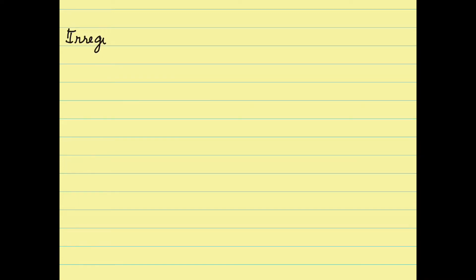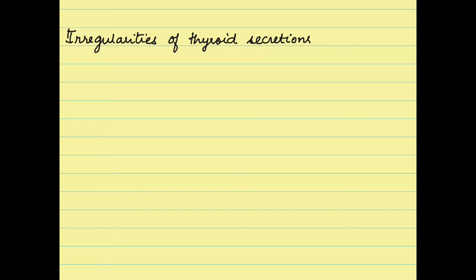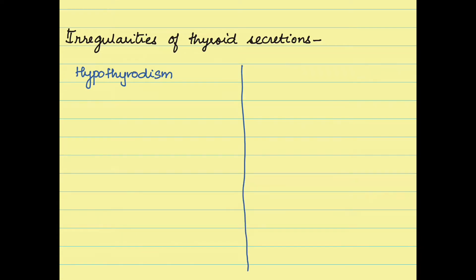In this video I'm going to talk about the irregularities of the thyroid gland secretions. The thyroid gland is an important gland which maintains the basal metabolic rate of our body. If thyroxine is secreted in less amounts it results in hypothyroidism, and if it is secreted in more amounts it results in hyperthyroidism.